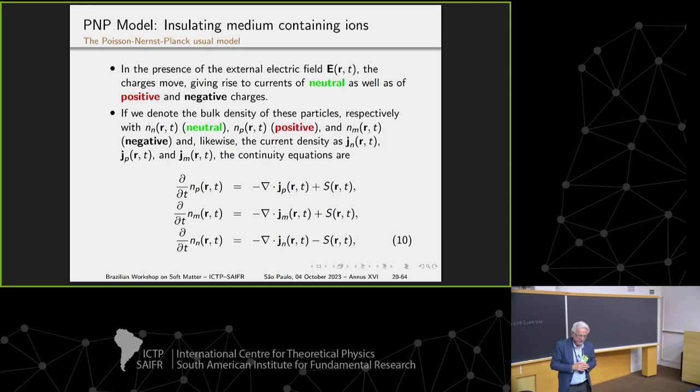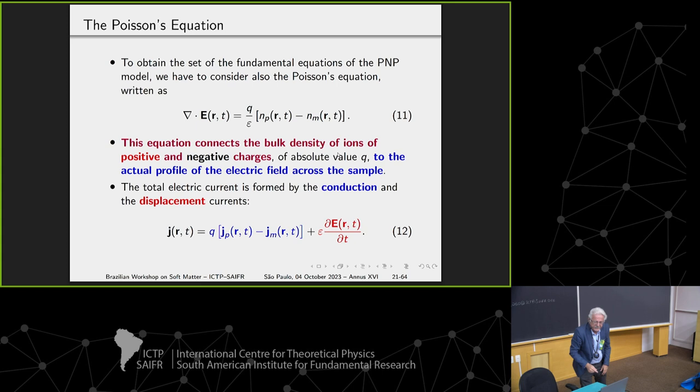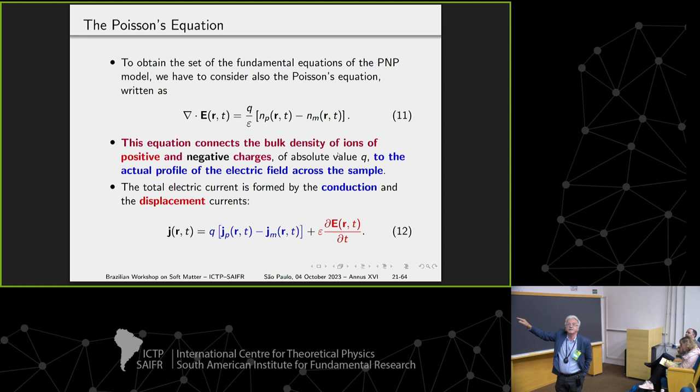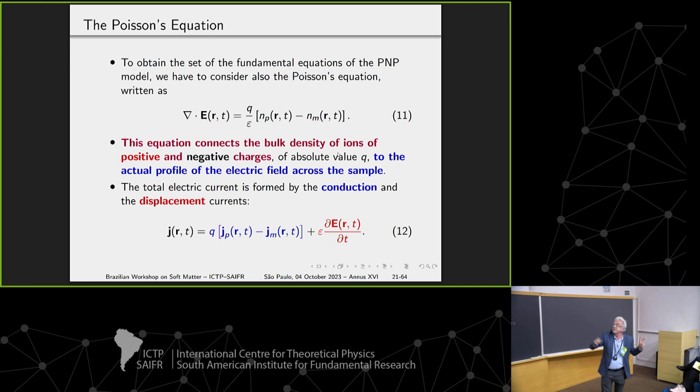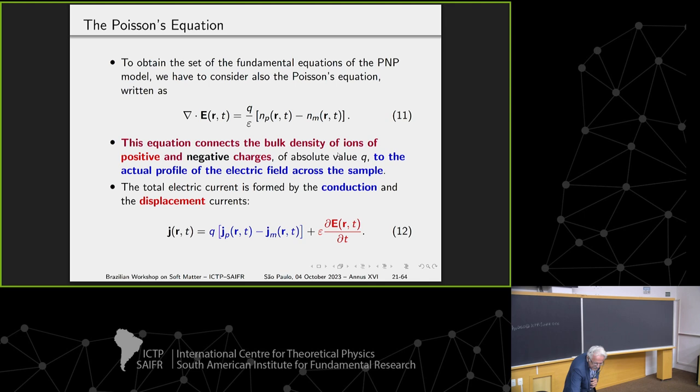These equations have this form. I will neglect later the neutral species. When we impose Poisson equations, we have to be sure that the current, the total current in the circuit in the sample, which is formed by two parts—the first part in blue is the conduction current, the moving charge, and the second part is displacement current, the genius guess of Maxwell, 1865,